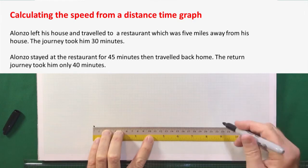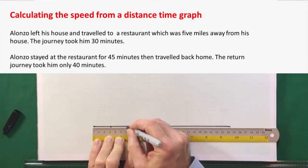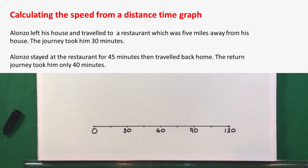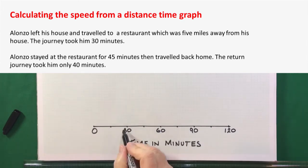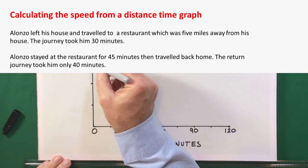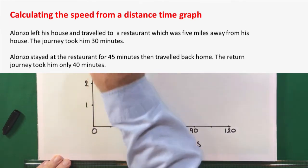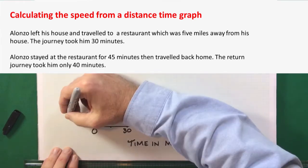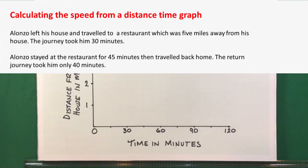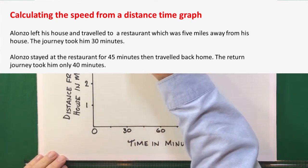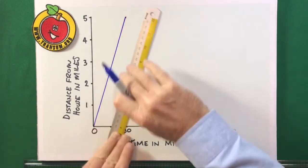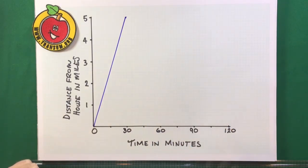Right, I'm going to have a go at drawing a distance time graph now for this situation. Alonzo left his house and traveled to a restaurant which was five miles away from his house. The journey took him 30 minutes. Alonzo stayed at the restaurant for 45 minutes and then traveled back home. And the return trip took him 40 minutes. So, I've worked out that I'll need 120 minutes altogether on my horizontal or the time axis. And then on the vertical axis, which represents the distance, I just need five miles because that's the furthest distance that he travels away from home. So, I know that that five miles was completed in 30 minutes. So, I can draw that blue line right there.